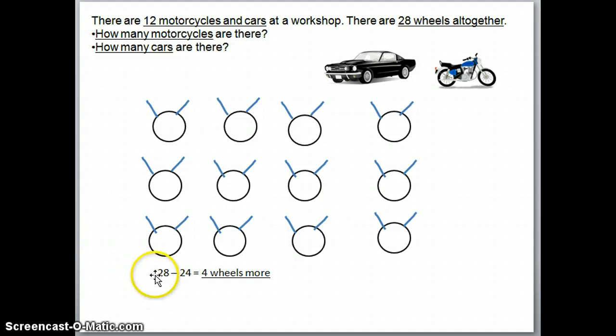Because they are supposed to be a total of 28 wheels. So, we take the total of 28 wheels, we minus the 24 wheels we have now. We actually need to have, draw 4 more wheels. So, who does these 4 wheels belong to? Do they belong to the? Yes, cars.